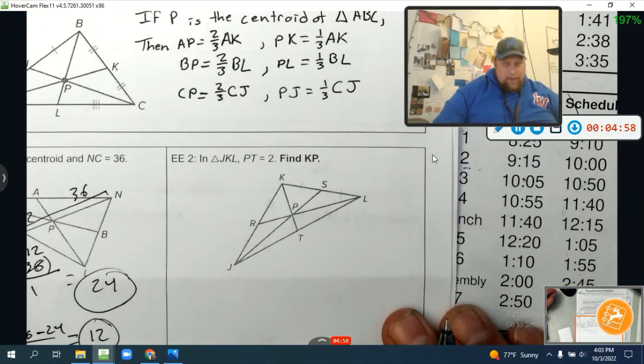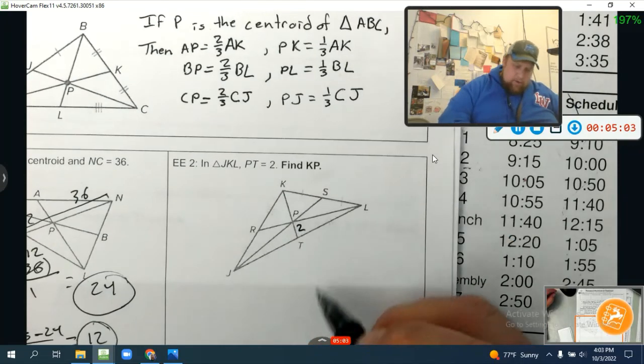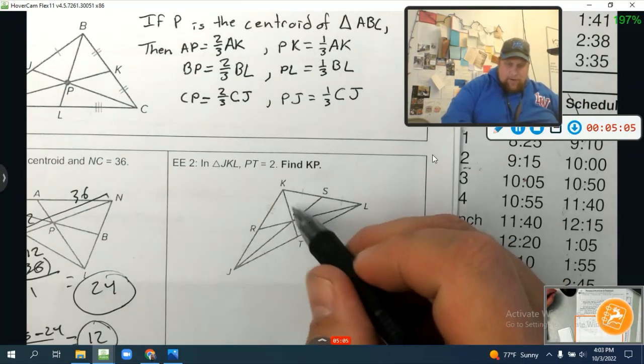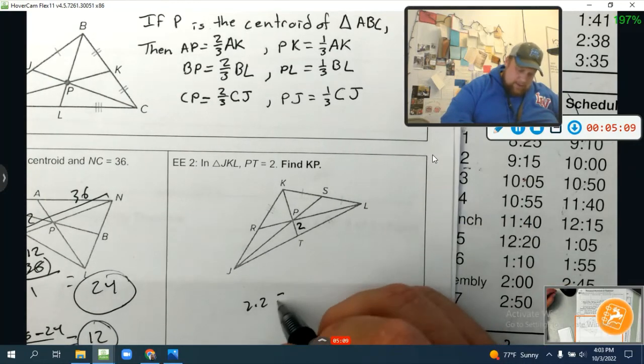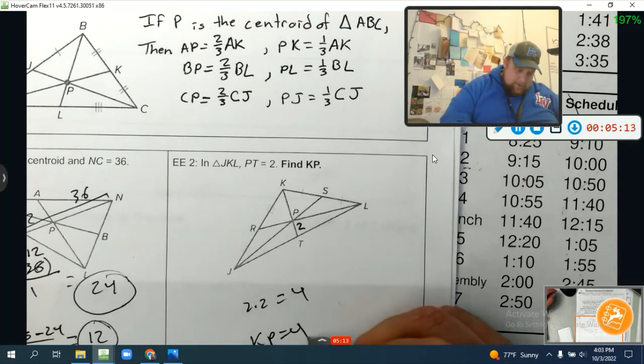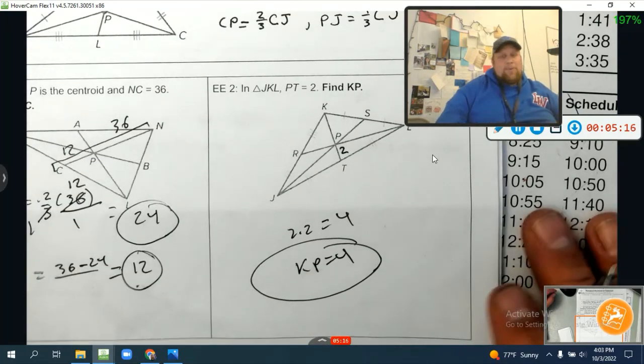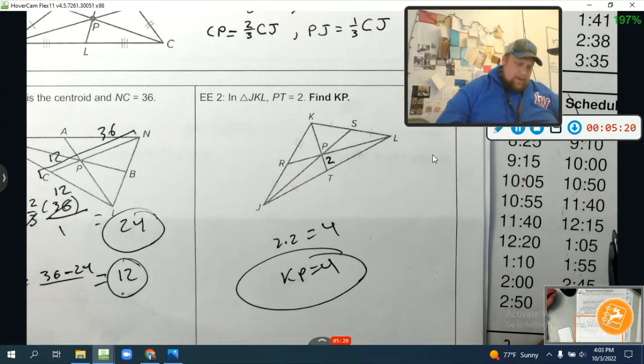So go ahead and pause that. That's how you work on it. Let's look at this one. Find KP if PT equals two. Well, if that's two, and that's one-third, then I know this is two of those, right? So what's two times two is four. So I know that KP equals four. It's really that easy, guys. You just use what you know about being a third. It's a third. It's one of the three parts.